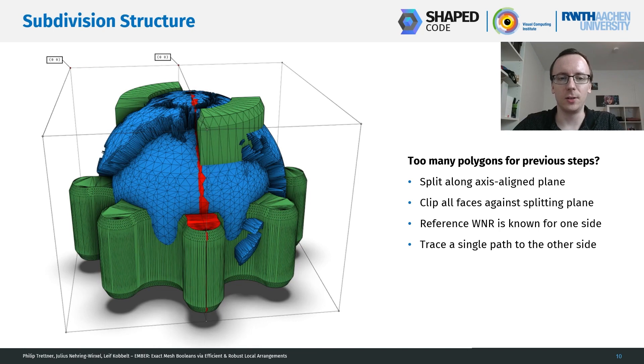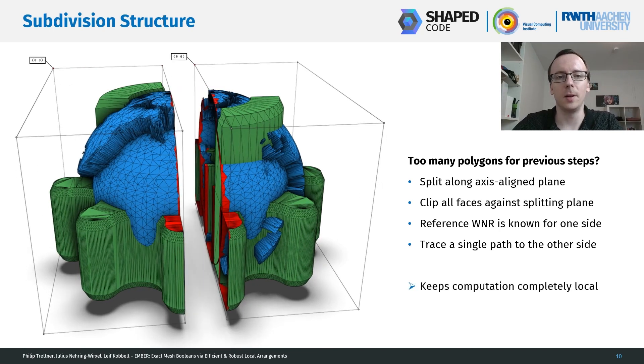This results in two completely independent sub-problems that, if they are too large again, can be split further until they're small enough so that the previous steps are efficient. And because we trace this local reference winding number, we have a computation that is completely local. And this is one of the big reasons why our method is so efficient. We also gain the opportunity for various optimizations here. So we have a few early out strategies that we can employ and our parallel implementation uses a work-stealing approach based on these sub-tasks.